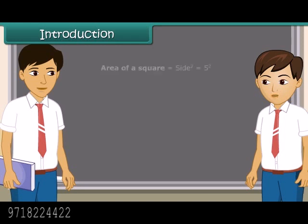What does 2 in the superscript of any number signify? It signifies the multiplication of any number with itself twice. So we call it a square of a number.